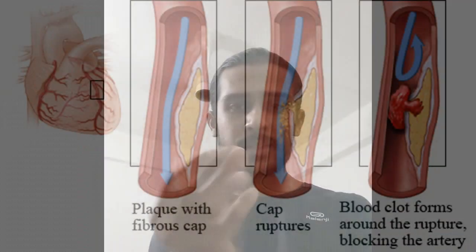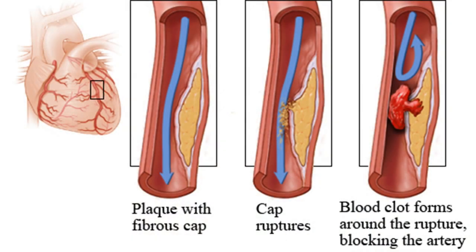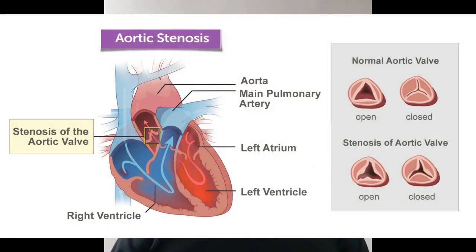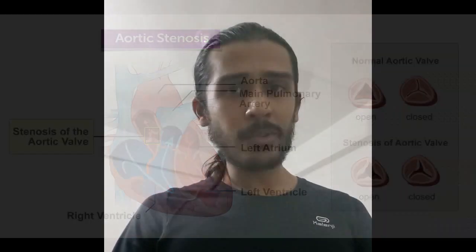In smaller vessels like the coronary artery, these lesions form as an obstruction, blocking blood flow from the inside of the artery. Some vessels may also undergo gradual stenosis, meaning the blood vessel becomes narrower than usual, which further restricts blood flow.